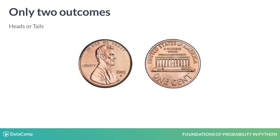In this case, the experiment is the flip of a coin. The possible outcomes are success — getting heads — or failure — getting tails. Each outcome is called an event. You assign probabilities to events. With a fair coin, you have a 50% chance of getting heads and a 50% chance of getting tails for each event.